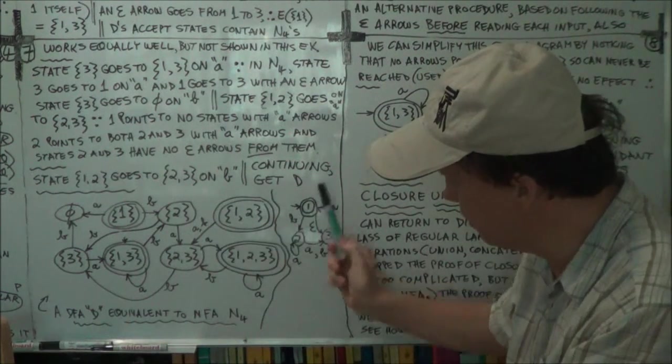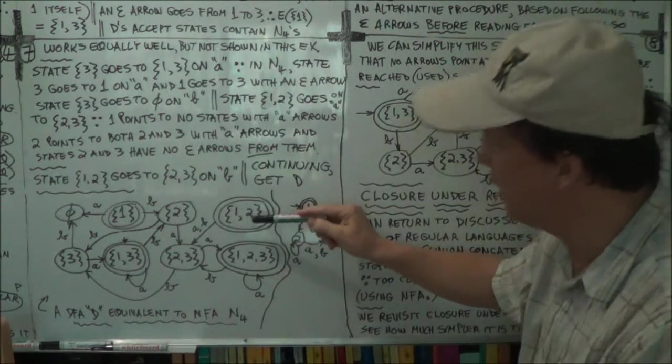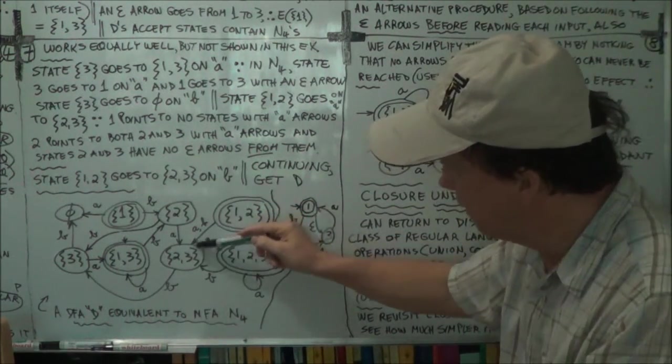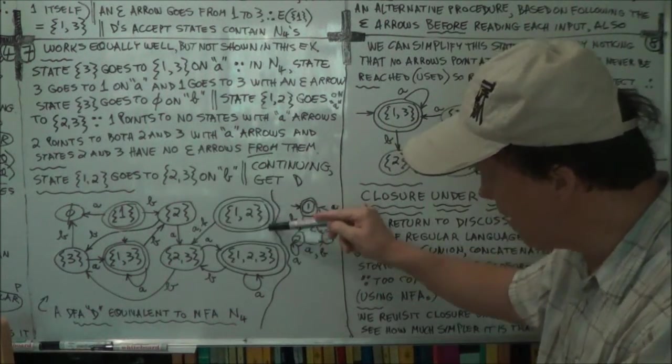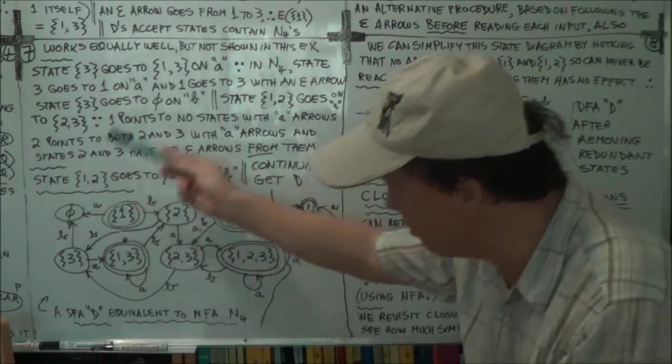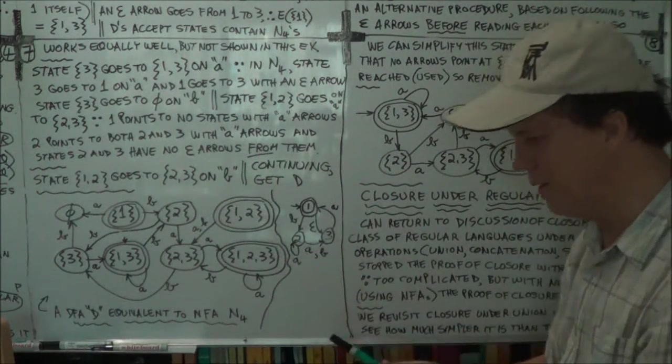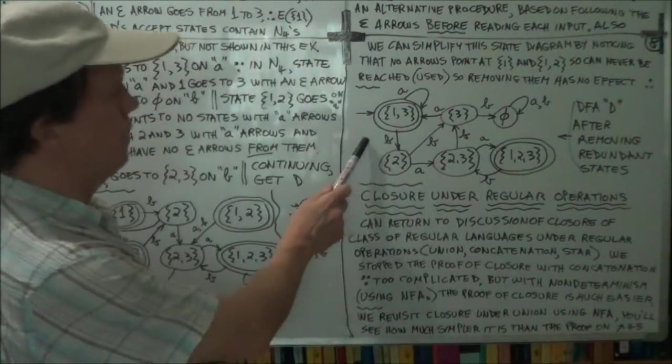And hence, if it never gets used, it can't be used to transition to another one. So this may as well not be there, and similarly for this also. Okay, so eliminate those two, and you get a simplified diagram that's this.